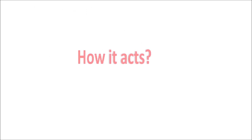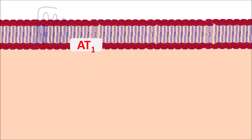Now let us see how this drug acts. On the vascular smooth muscle, angiotensin 2 receptor subtype 1 receptors are present, designated as AT1 receptors. We should not confuse that AT1 receptors are the receptors for angiotensin 1 — these are the angiotensin 2 receptors of type 1, designated as AT1. On these receptors, angiotensin 2 can act to produce vasoconstriction.